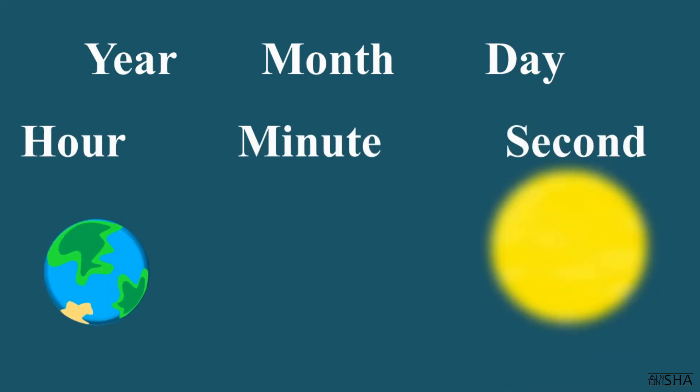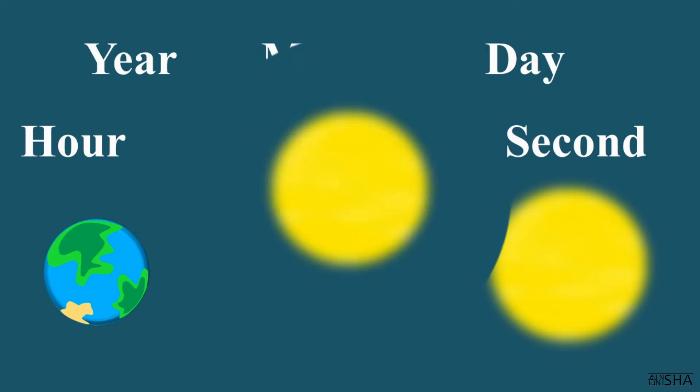Time units are based on the period of rotation of the earth around its own axis and around the sun, as well as on the rotation of the moon around the earth.